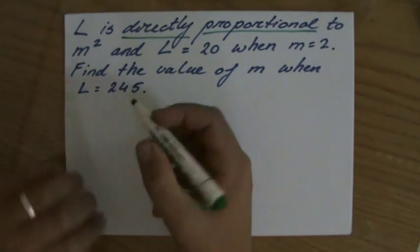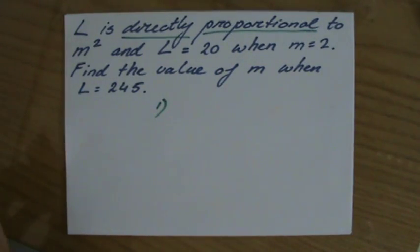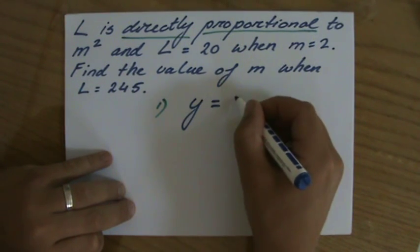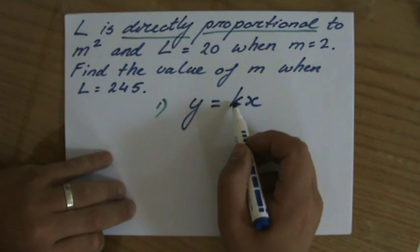And immediately, I can already write down my first step because these questions consist of doing three steps, where the first one is writing down the general equation: y equals constant times x.